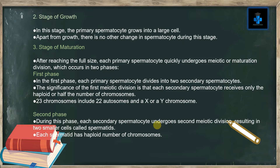The third stage is the stage of maturation. After reaching full size, each primary spermatocyte quickly undergoes meiotic or maturation division, which occurs in two phases. In the first phase, each primary spermatocyte divides into two secondary spermatocytes. The significance of the first meiotic division is that each secondary spermatocyte receives only the haploid or half number of chromosomes.